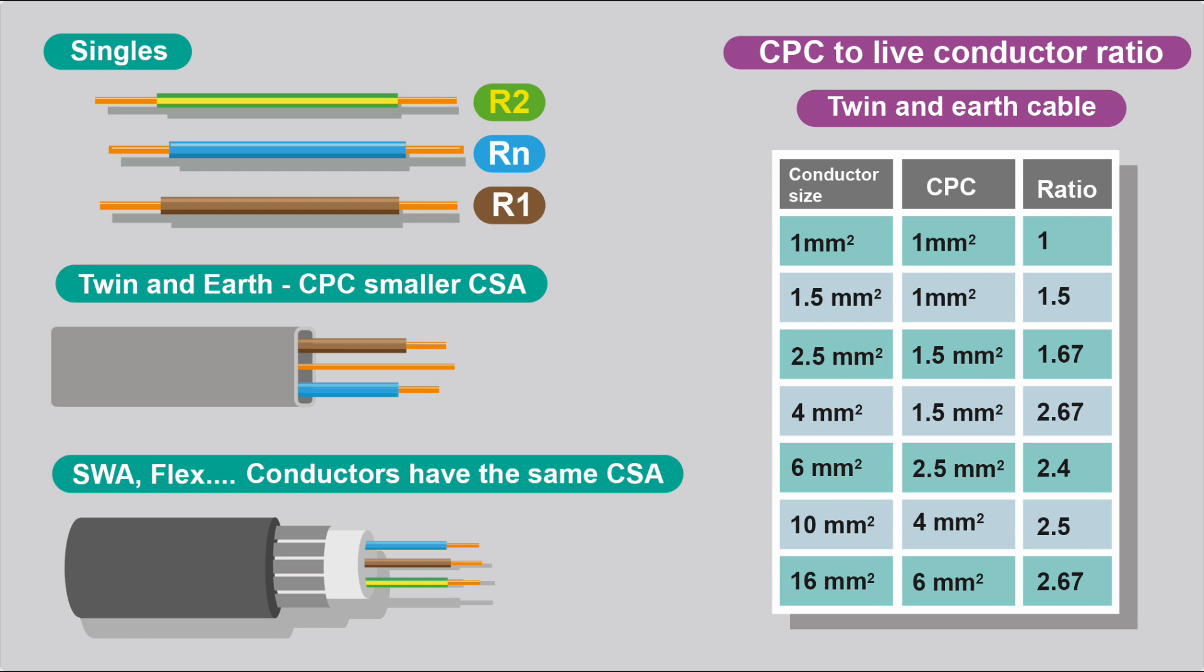On the table here, you can see it. Generally, 1mm² cable has a 1mm CPC, 1.5mm has a 1mm, 2.5mm has a 1.5mm, 4mm has a 1.5mm² CPC, 6 is a 2.5mm.